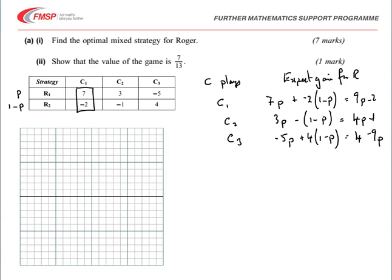We can now put the lines that we've produced or those equations, 9P minus 2, etc., onto a graph. The axis here shows the different values of the probability going from 0 up to 1, and then the vertical axis is the expected gain. So for C1, when P equals 0, it starts off at negative 2. And when P equals 1, it goes up to 7. So we have a line going from negative 2 up to 7. It's always worth labeling that with where it came from. So this comes from Corrie playing C1, or you could label it with the equation 9P minus 2 if you wish.